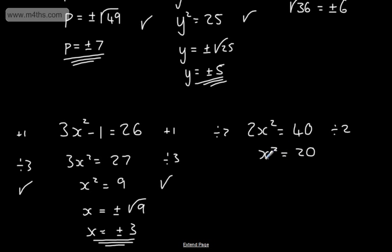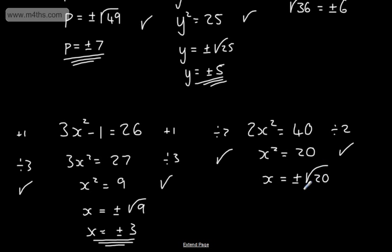Some students at this point say divide both sides by 2 again — but square rooting isn't dividing by 2. Taking the square root of both sides gives us plus or minus the root of 20. If you've done any work with surds, you might want to simplify this, and that would give us 2 root 5.